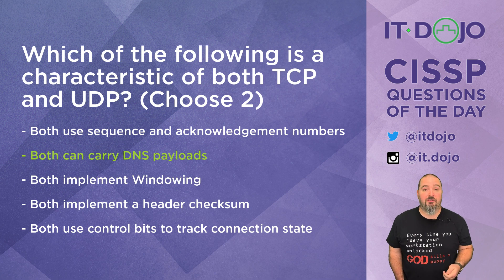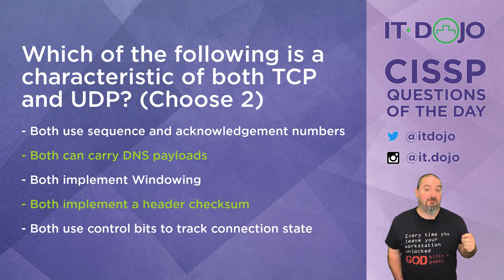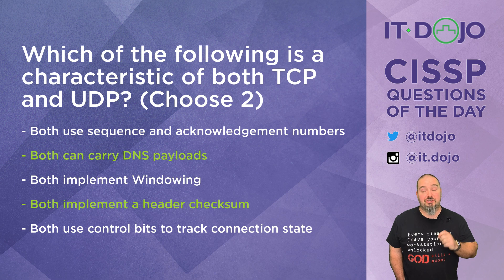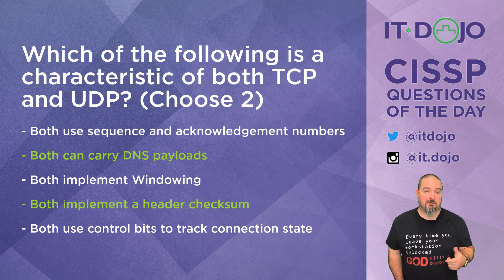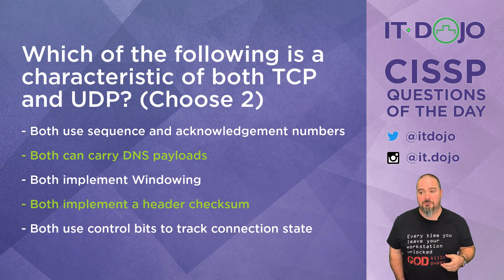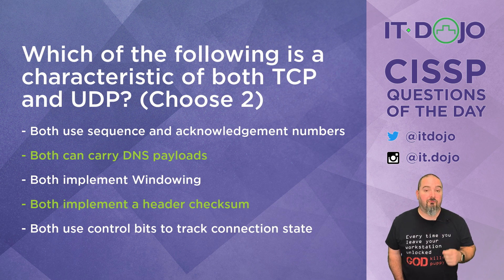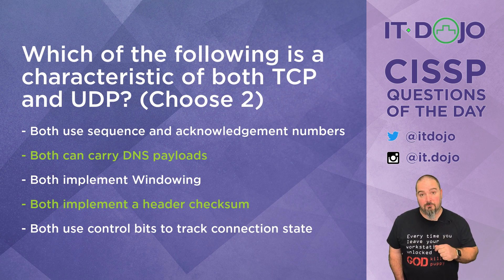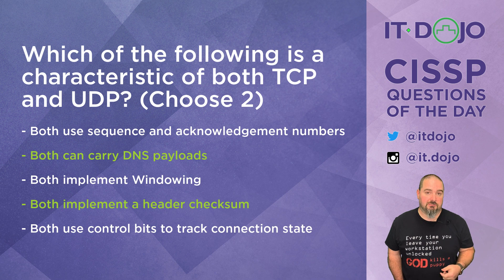Answer choice four: they both implement a header checksum — yes. Both TCP and UDP headers have a checksum that checks the integrity of the rest of the data in the header. Note that these checksums do not check the integrity of the payloads, only the header. For comparison, in IP version 4 there is a header checksum, but in IP version 6 there is not. However, with TCP and UDP, regardless of whether it is IPv4 or IPv6, the header checksum still exists within both of those protocol headers.